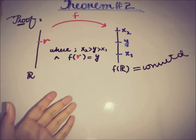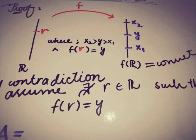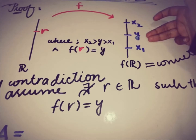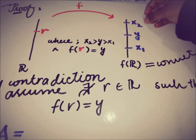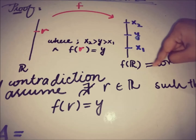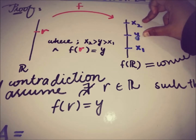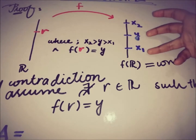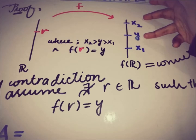Under our assumption, y is not the image of any element in ℝ. This means every element between x1 and y, and elements below x1, are images of elements of ℝ — and similarly, elements between y and x2, and above x2, are also images of elements in ℝ. From this we can form two subsets: one containing images of elements of ℝ below y (from negative infinity to y), and one containing images above y (from y to positive infinity).